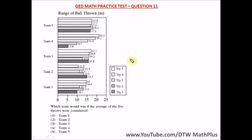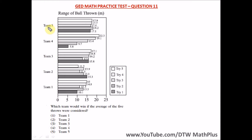We're considering this particular chart here. This is a range of ball thrown in meters, and we have team 1, team 2, team 3, team 4, and team 5.